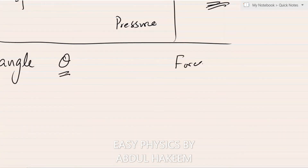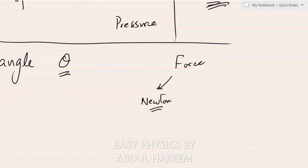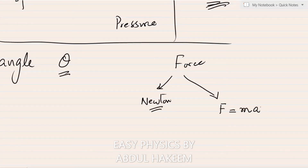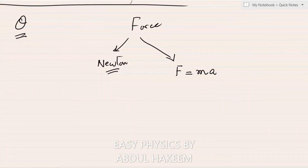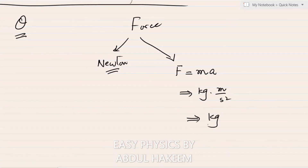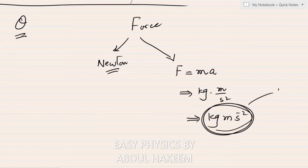For example, force: its SI unit is Newton. The SI unit is usually the name of a scientist. For the base unit, we use the formula F = ma. M represents mass (kilogram), and acceleration is metre per second squared, so the base unit of force is kilogram·metre·second to the power minus two (kg·m·s⁻²).